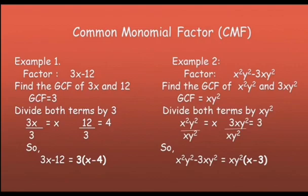Example number 2: factor x squared y squared minus 3xy squared. Find the GCF of x squared y squared and 3xy squared. Their GCF is xy squared. Because in getting the GCF of two terms, we get the term with the least exponent.